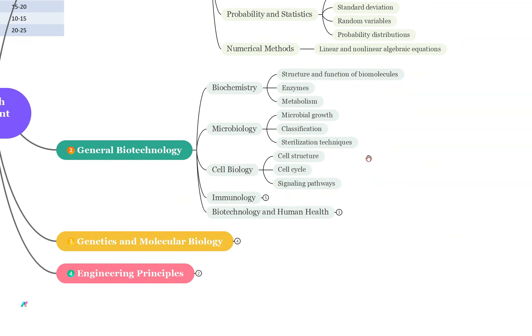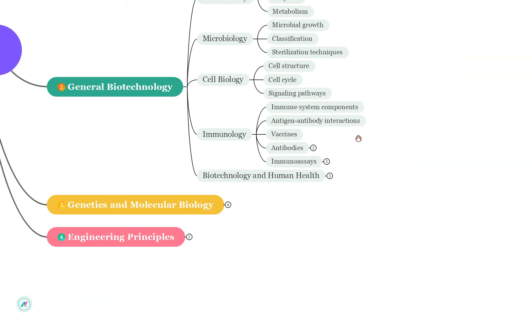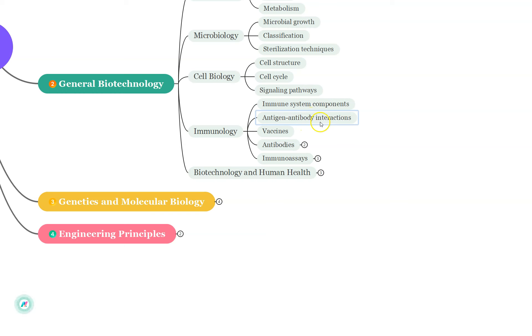Cell Biology: Cell Structure, Cell Cycle and Signaling Pathways. For Signaling Pathways, you must know the signal name and the receptor molecules. You can expect match the following questions. Immunology: Immune System Components, Antigen-Antibody Interactions, and Vaccines.